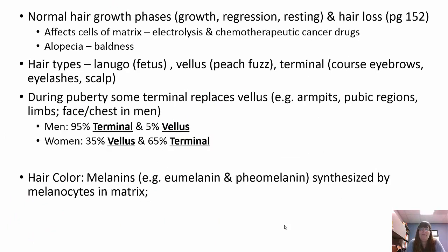Normal hair growth occurs in phases: growth, regression, resting, and then hair loss. The growth phase is when it's actively growing, then regression where it starts to die off, then a resting phase, and then it starts to grow again. Things that affect the cells of the matrix, like electrolysis and chemotherapy, cause hair to fall out. Chemotherapy drugs target highly mitotic cells, and hair cells are highly mitotic — that's why your hair falls out during chemotherapy.